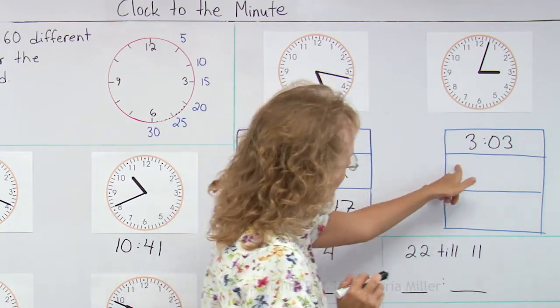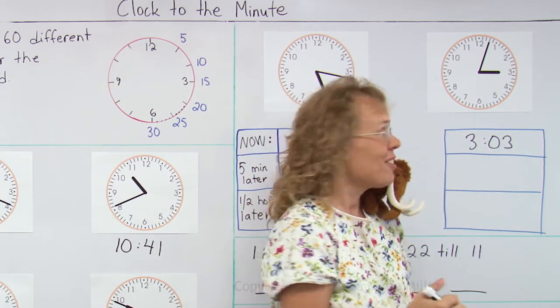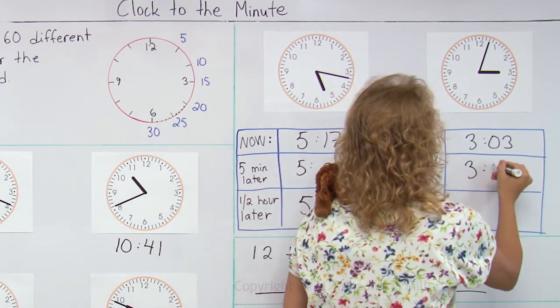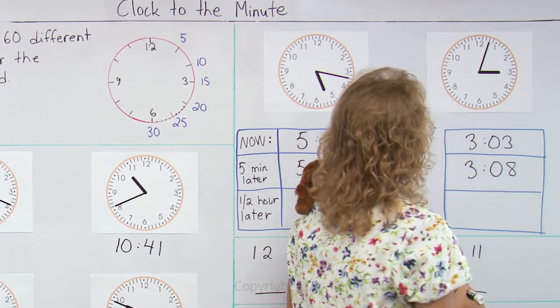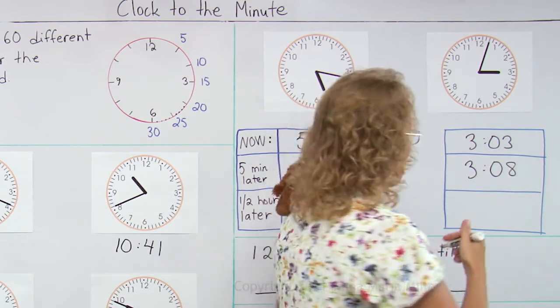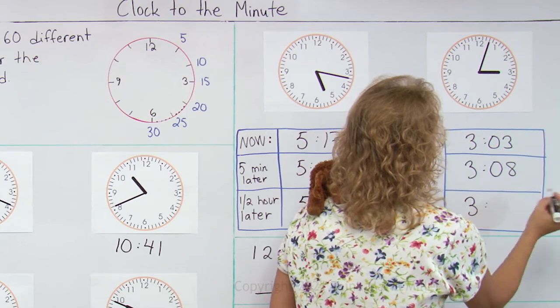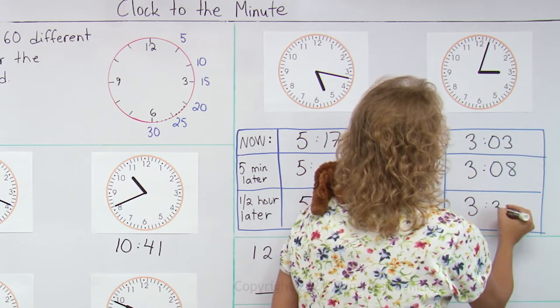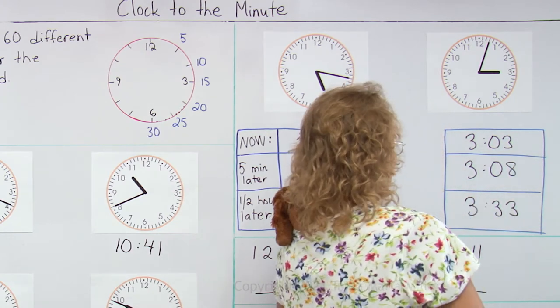5 minutes later, again you add 3. Yeah, this is easy. 3-0-8. And half an hour later, not difficult. Add 13 minutes to that, so we get 3.33. Lots of 3s.